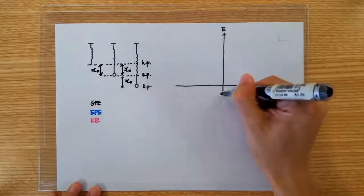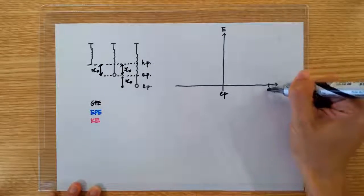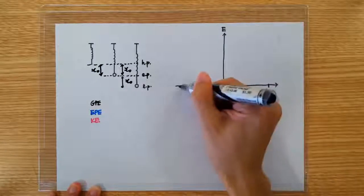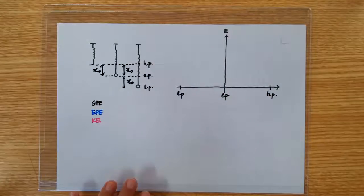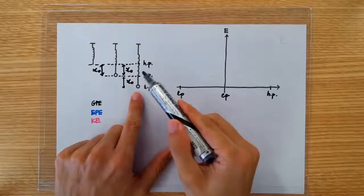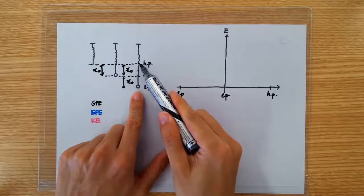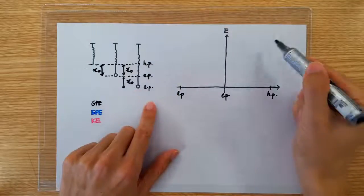So the equilibrium position will be right here, and we'll put the highest position here and the lowest position here. Let's start with the GPE. The GPE is going to increase from the lowest point all the way to the highest point, and it's going to be a straight line graph.